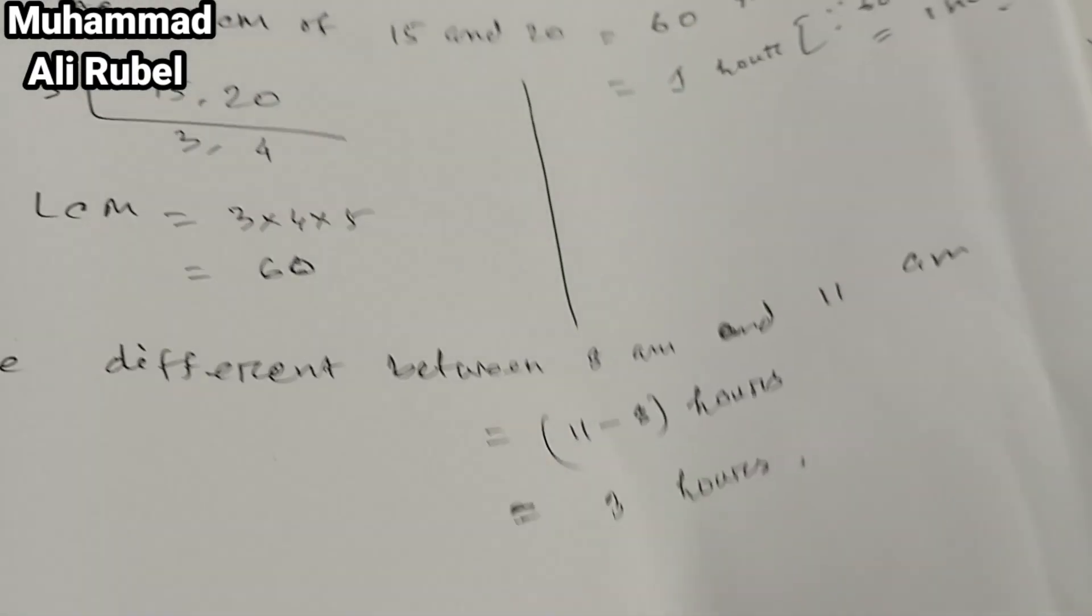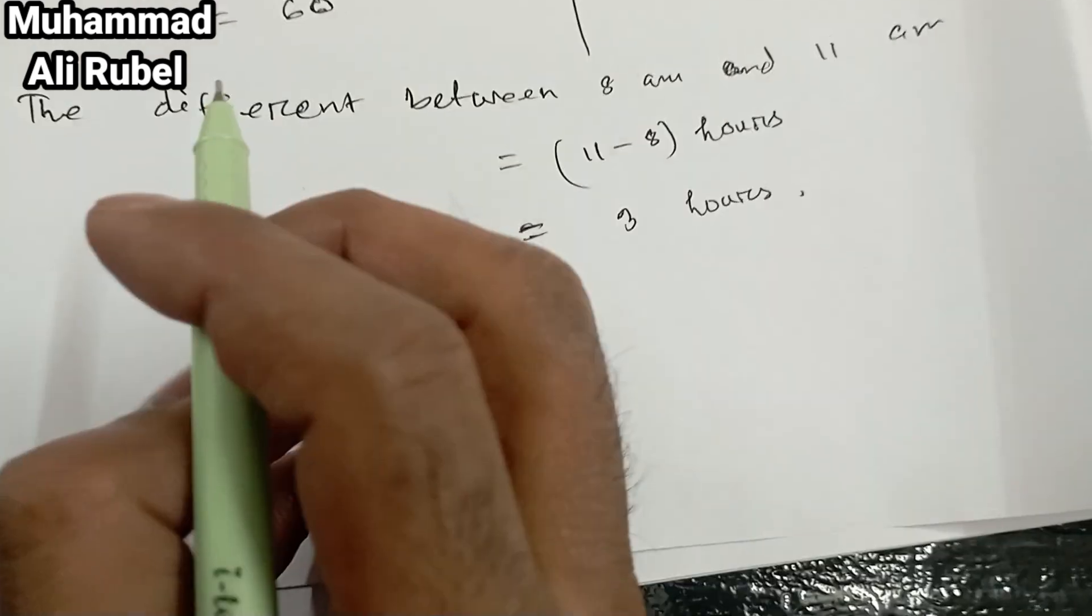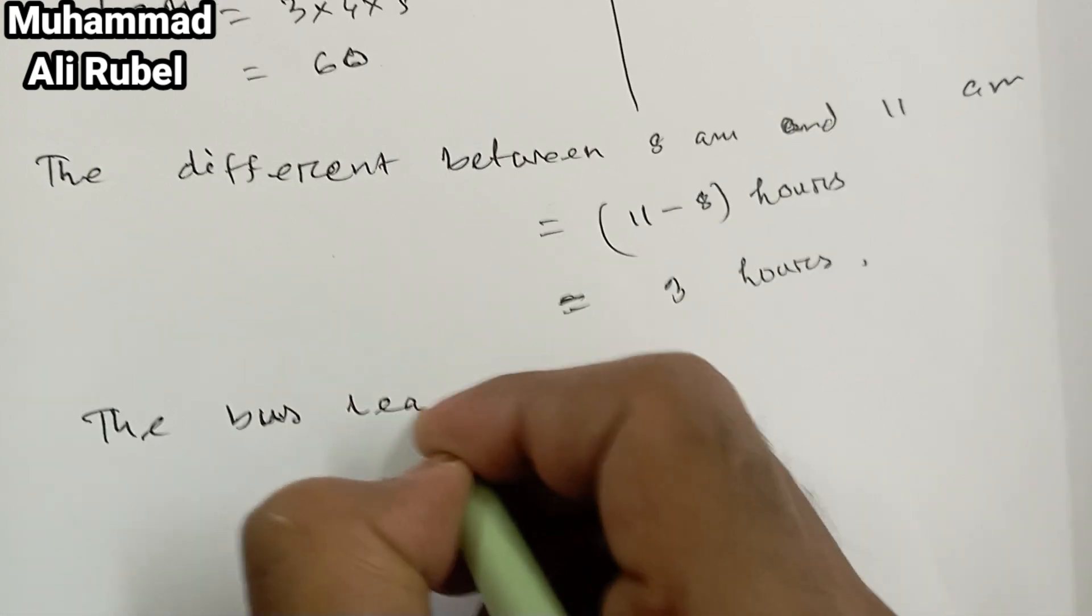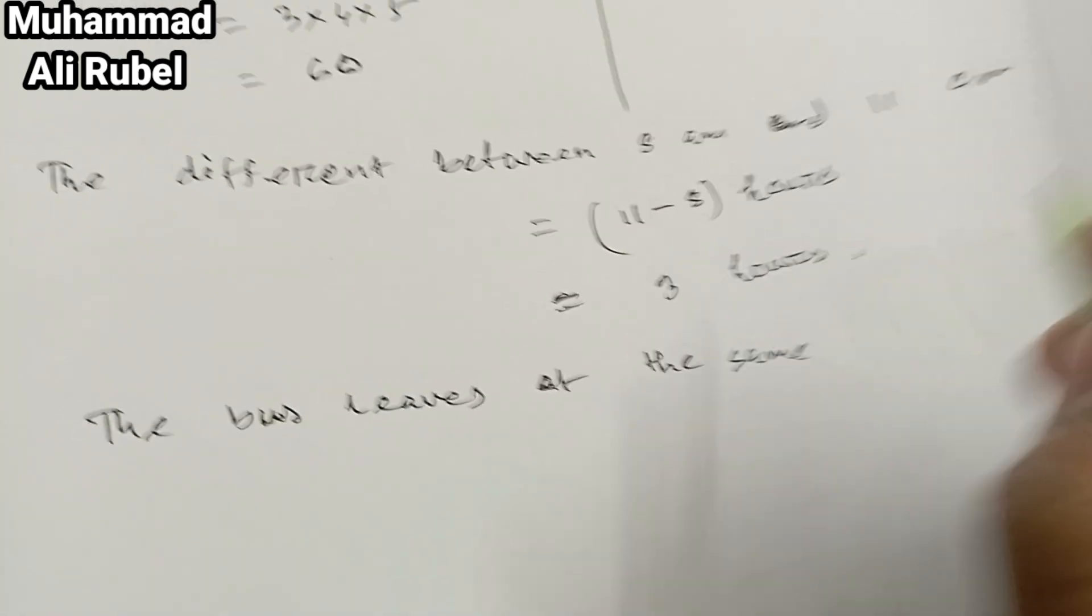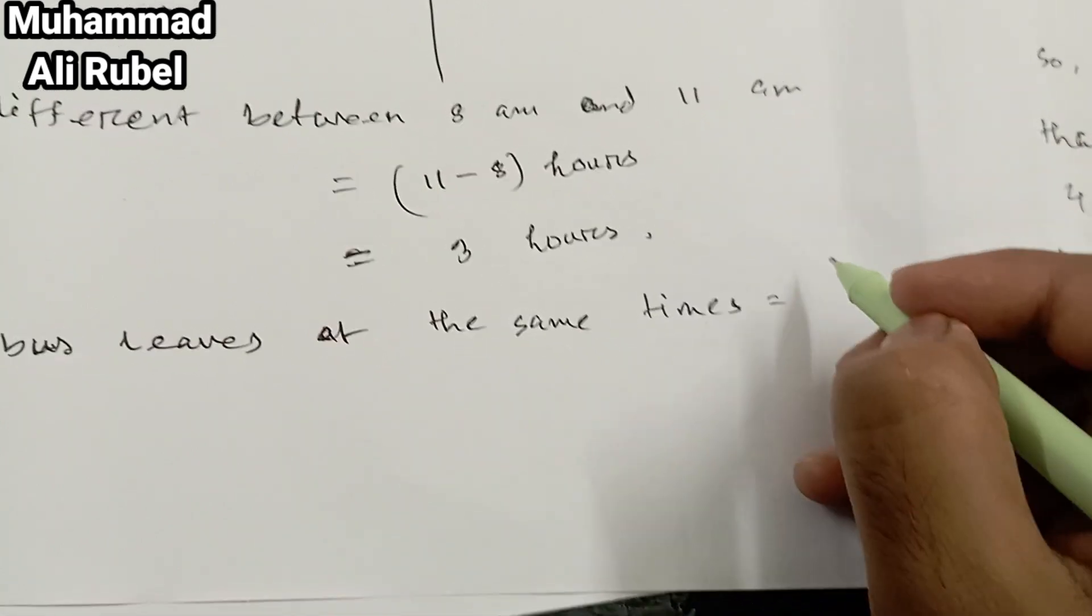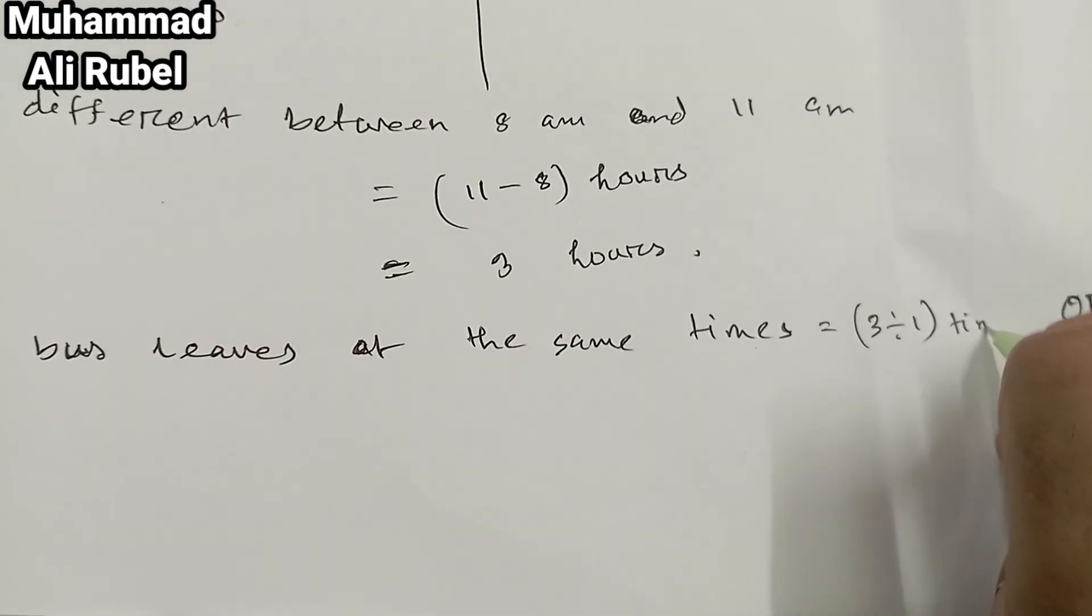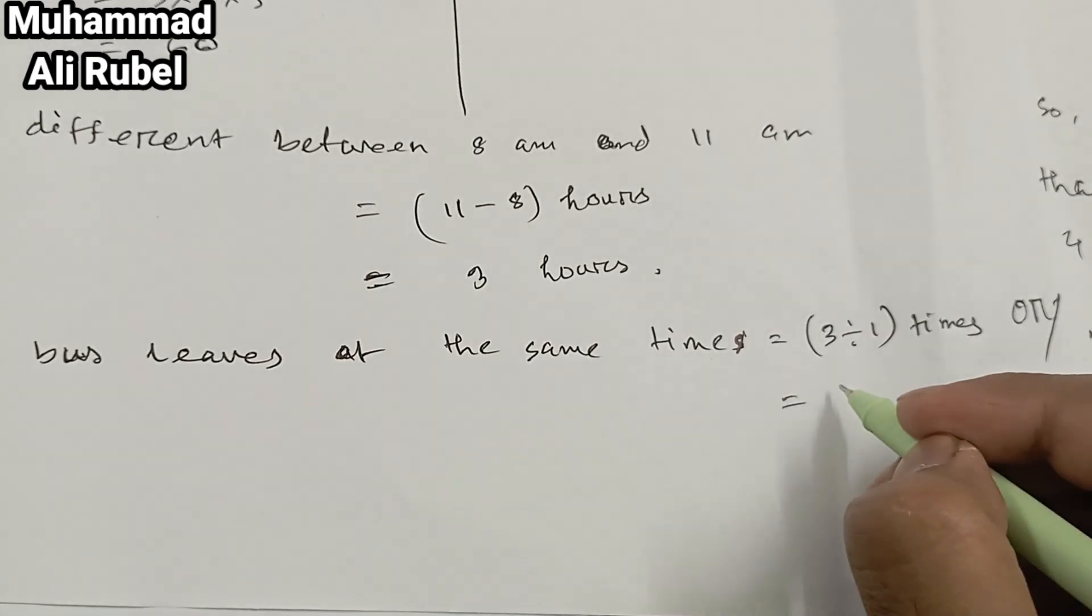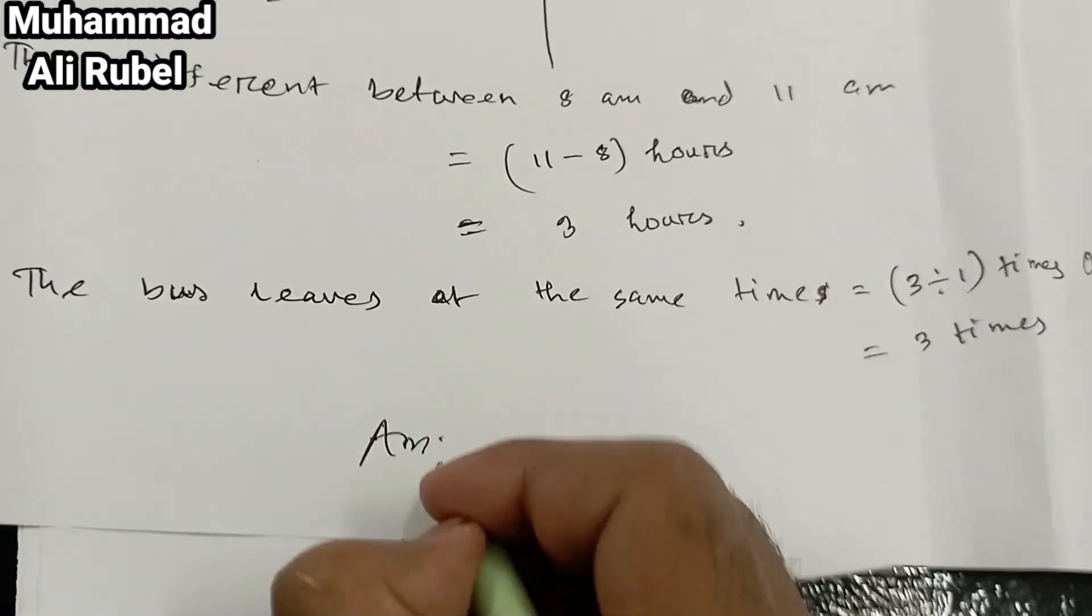The buses leave at the same time 3 hours divided by 1 hour equals 3 times. Answer: 3 times.